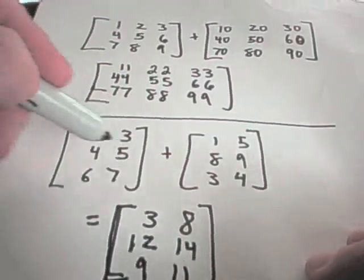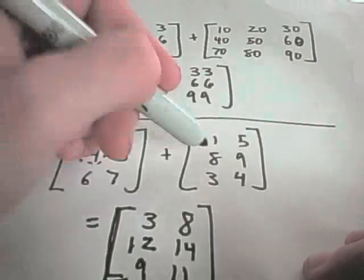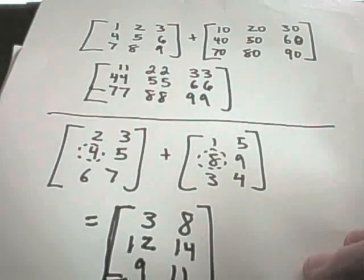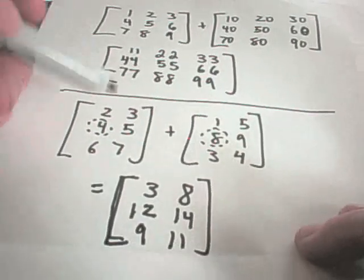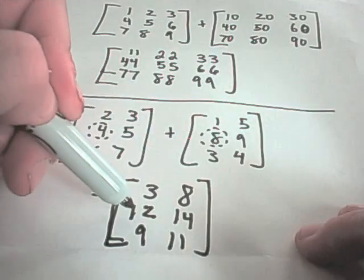Okay. So you're just looking at, basically, corresponding places in the matrix and adding those values together. So, for example, the 4 plus the 8 give us 12.